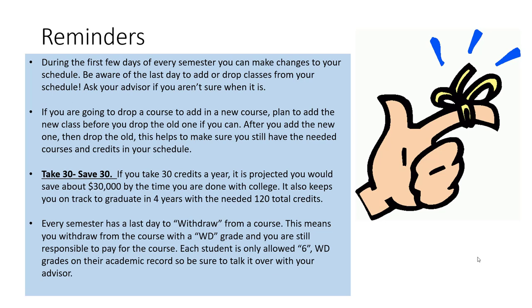Another important thing to remember is Take 30, Save 30. If you take 30 credits a year, it is projected that you will save about $30,000 by the time that you are done with college. It also helps keep you on track to graduate in four years with the needed 120 total credits.